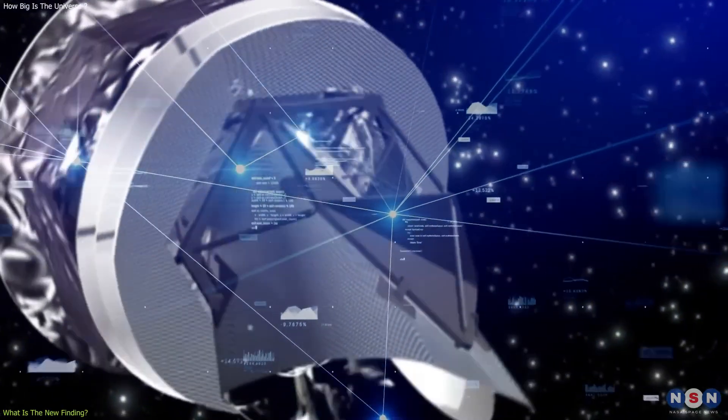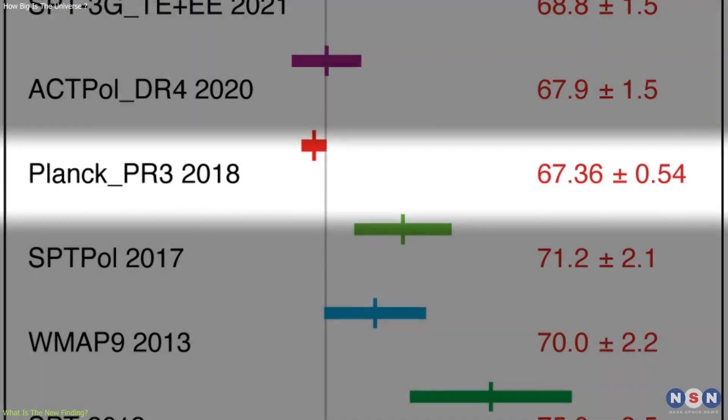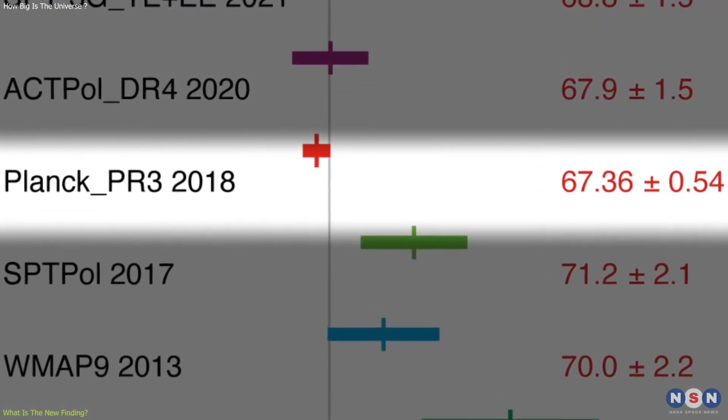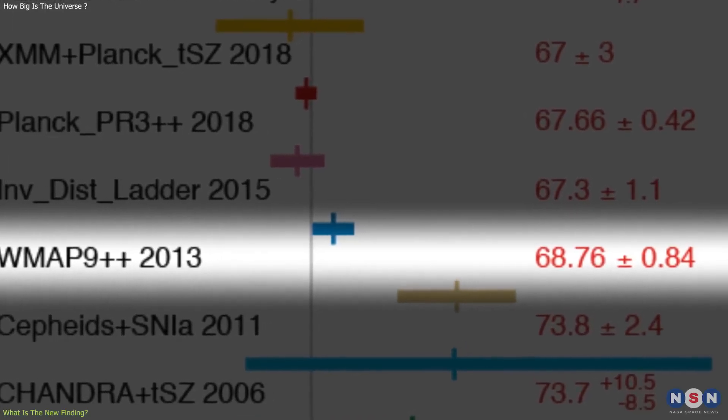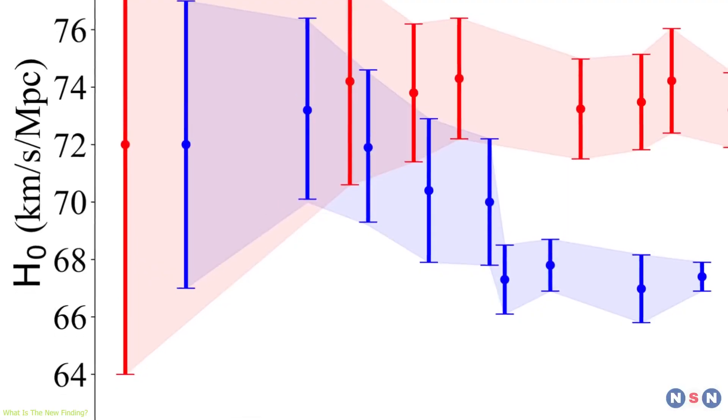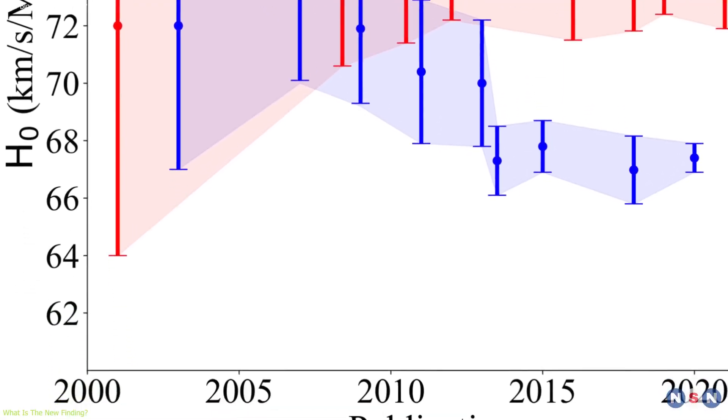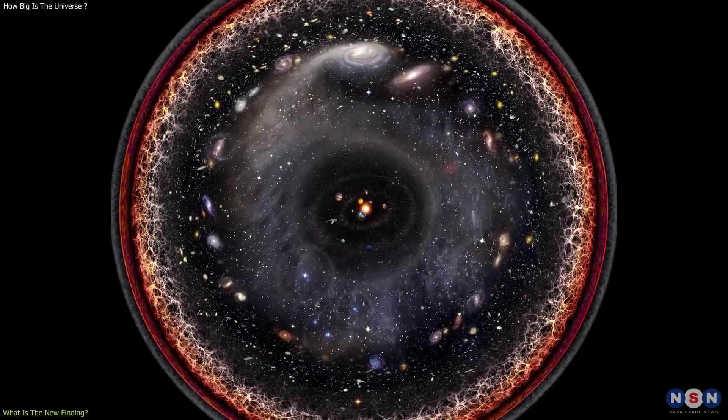The other reason is that the Planck data gives a lower value of the Hubble constant, which is about 67.4 kilometers per second per megaparsec, instead of 69.3 kilometers per second per megaparsec, as estimated by WMAP. As we explained before, a lower Hubble constant means a faster growth of the particle horizon and a larger observable universe.